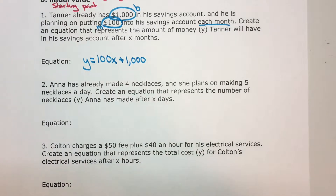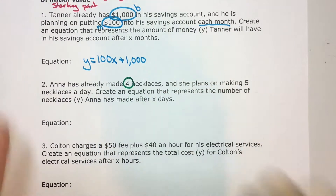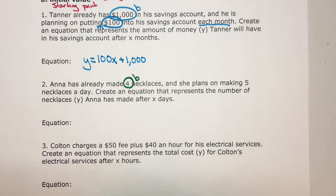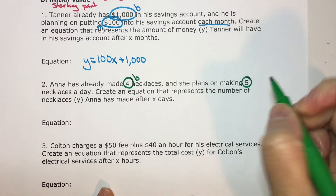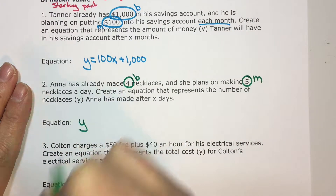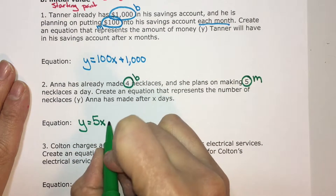Anna has already made four necklaces, and she plans on making five necklaces a day. Create an equation that represents the number of necklaces y Anna has made after x days. She already made four necklaces — that's her starting point, so that's b. She plans on making five necklaces a day, that's what she's increasing by every single day, so that's m, the rate of change. The equation is y equals 5x plus 4.